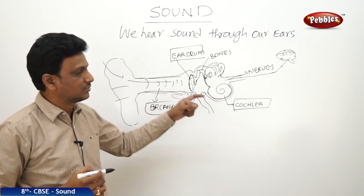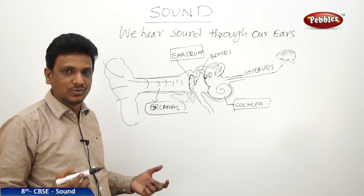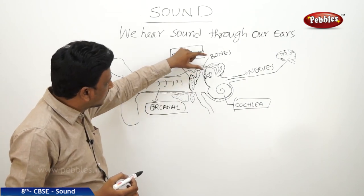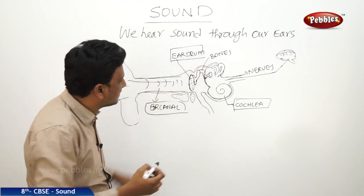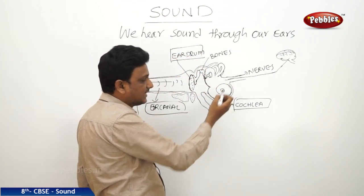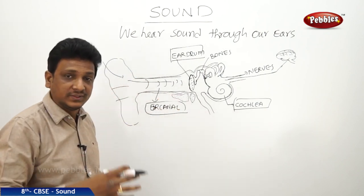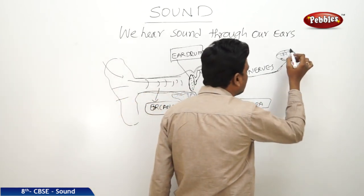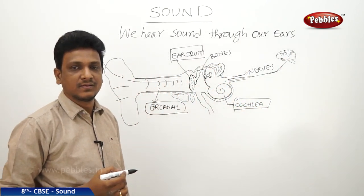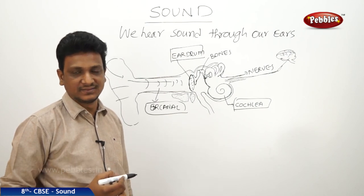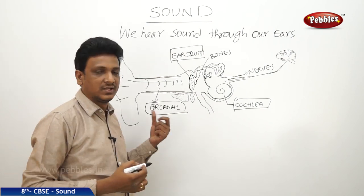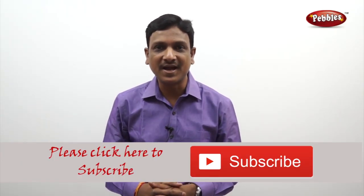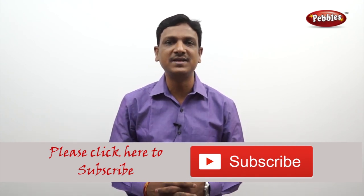The vibrations go to the fluid in the cochlea, and these vibrations are converted into nerve impulses. These nerve impulses are carried by nerves to the brain. The brain gets the sound and analyzes what sound it is — this is how you are able to listen to sounds. To summarize: sound waves from outside pass through the ear canal, hit the eardrum, which makes the bones move, creating vibrations in the cochlea where they are converted into electrical signals carried by nerves to the brain. If you like this video, please give a thumbs up and subscribe to our channel for more videos on the CBSE syllabus.